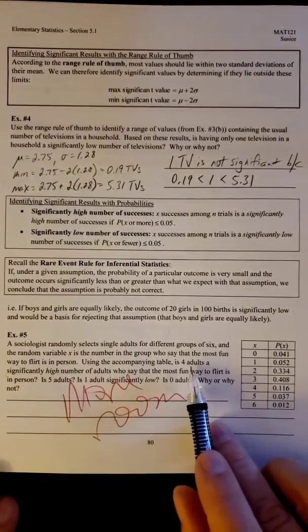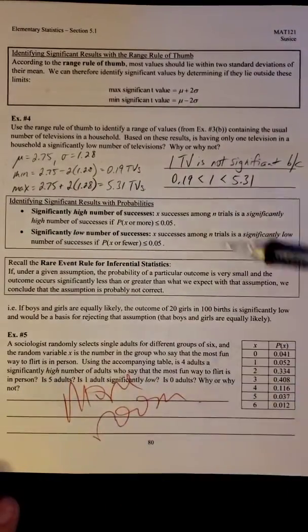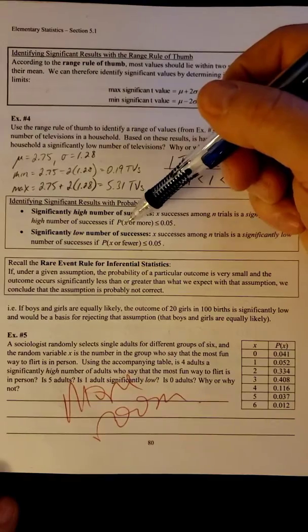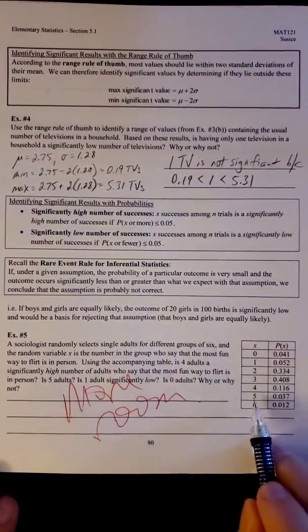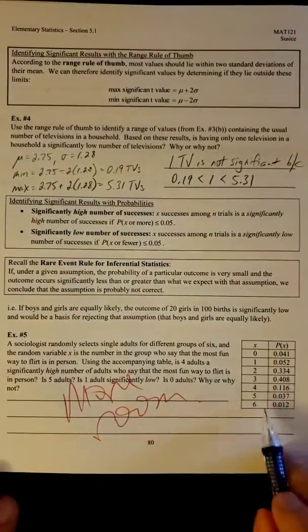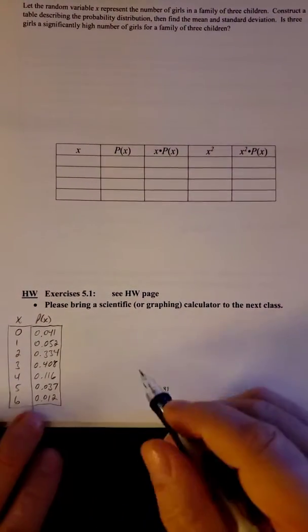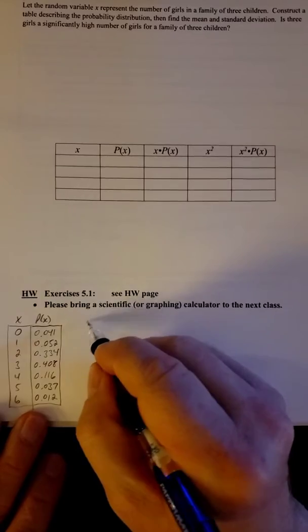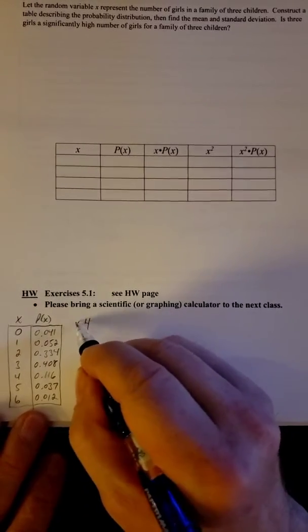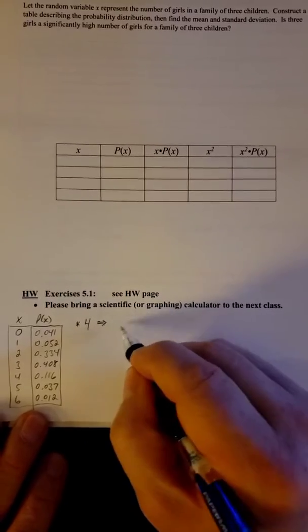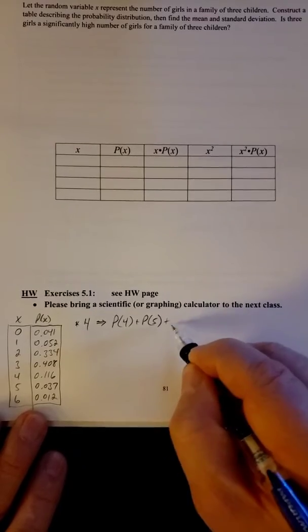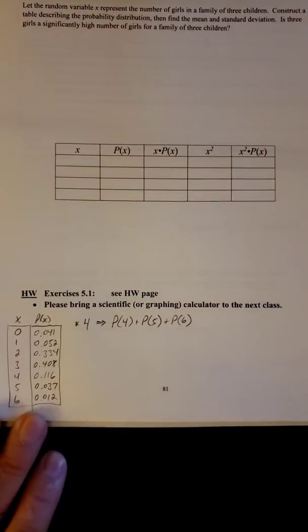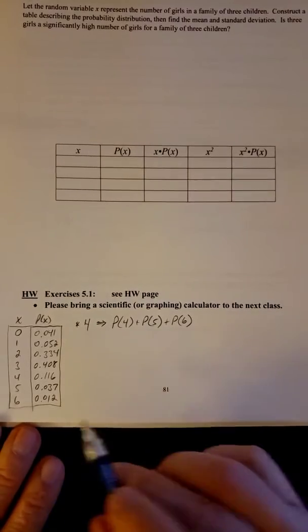So is 4 a significantly high number of adults? Remember, if you're looking at significantly high, we have to look at that specific case and above. So they want you to look at 4, 5, and 6, all three of these probabilities. So I wrote it down here. For 4, we need to look at the probability of 4, probability of 5, and the probability of 6, all together, and compare that to 5%.